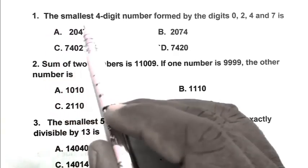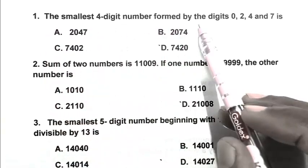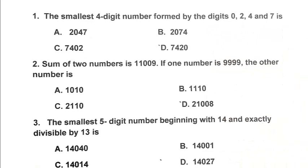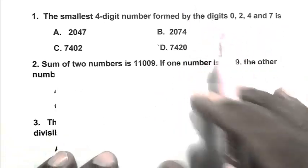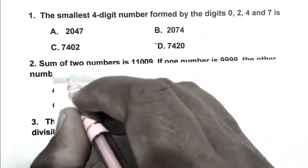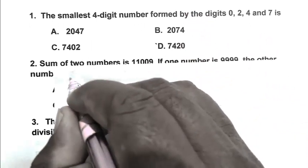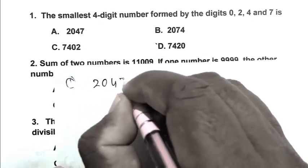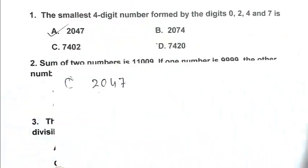Question number 1. The smallest 4 digit number formed by the digit 0, 2, 4 and 7 is. So friend, we have to form 4 digit smallest number. So we have to write smallest digit first. That is 2, after that 0, after that 4, after that 7. So A is the right answer.